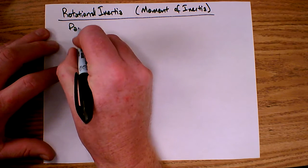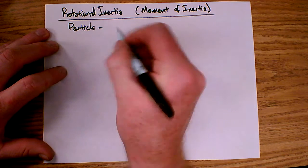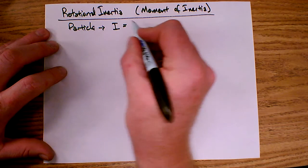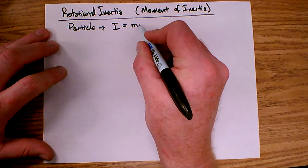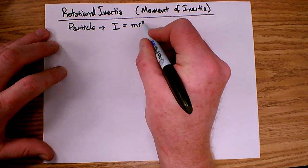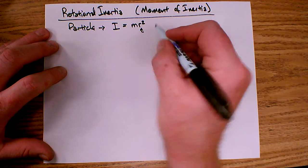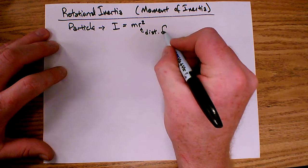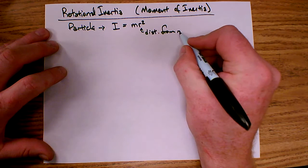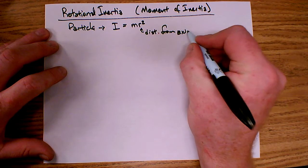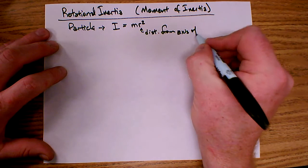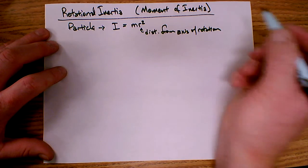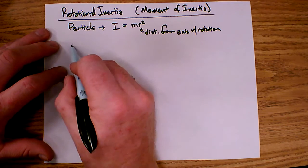So for a particle, the inertia is equal to the mass times r squared, where r is the distance from the axis of rotation. So mr squared.